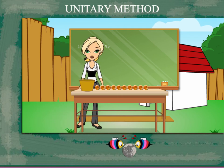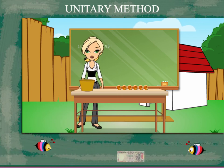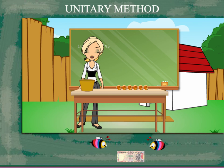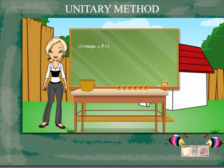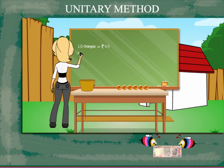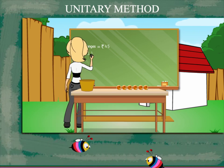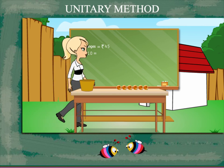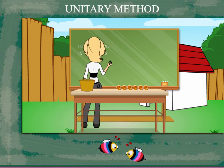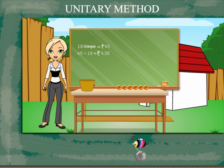Rosimam now calculates. She divides rupees 45 by 10 to find the cost of one orange. It is rupees 4 and 50 paise. The cost of four oranges is rupees 4.50 multiplied by 4.